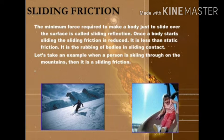Once a body starts sliding, the sliding friction is reduced — it is less than static friction. It is the rubbing of bodies in sliding contact. For example, when a person is skiing on a mountain, that is sliding friction. We see many such examples in daily life whenever an object slides over the surface of another object.